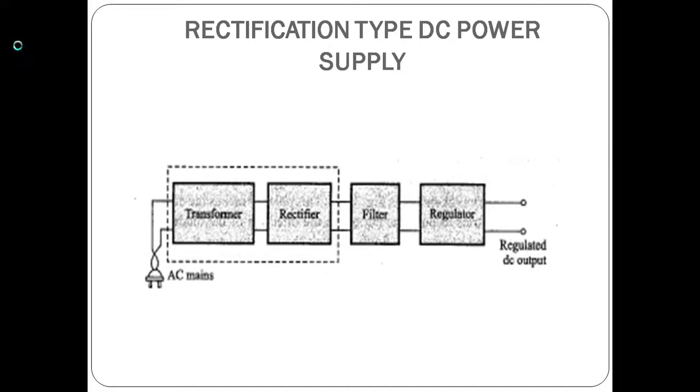This block diagram shows the rectification type supply. AC is given to a transformer, then to a rectifier, filter, and regulator. Finally, you get a regulated DC output.